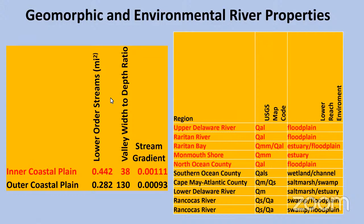If you look at the width-to-depth ratio — in other words, whether the streams are narrow and deep or wide and shallow — that ratio shows that intercoastal plain streams are much narrower and deeper than outer coastal plain streams. So they're going to look very different that way. You can also see a slight difference in stream gradient, but that's not nearly as significant here.